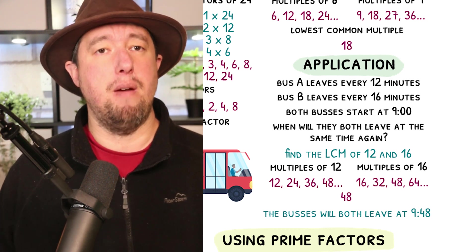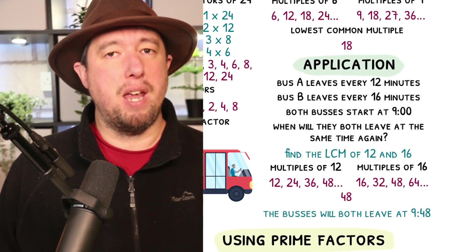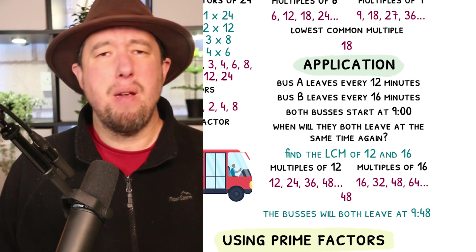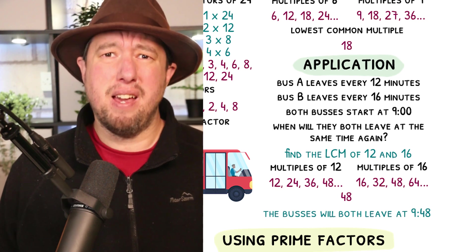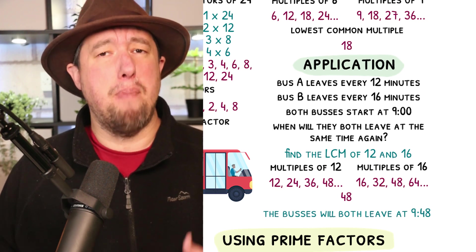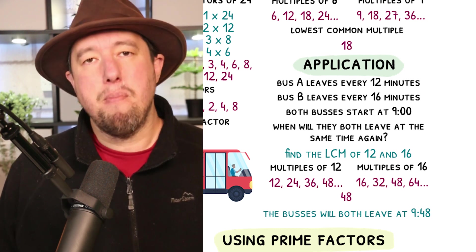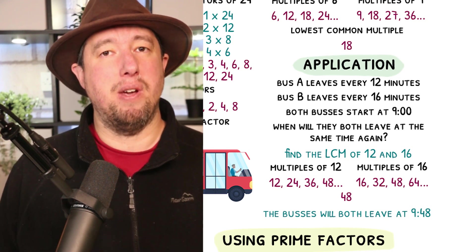At 9:12, Bus A will leave again, but Bus B will leave 4 minutes later. Seems like it's going to be tricky to find out when they both will leave next. Not so much, actually, since this is secretly an LCM question.